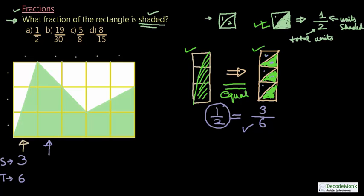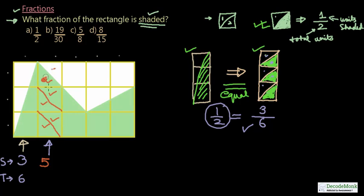Coming to the second column, considering each square broken down into two triangular units: counting the shaded subunits gives us 5 shaded portions out of a total of 6 subunits in that column.